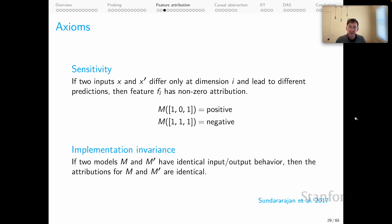Just quickly, I'll mention a second axiom, implementation invariance. If two models, M and M prime, have identical input-output behavior, then the attributions for M and M prime are identical. That's very intuitive. If the models can't be distinguished behaviorally, then we should give them identical attributions. We should not be sensitive to incidental details of how they were structured or how they were implemented.